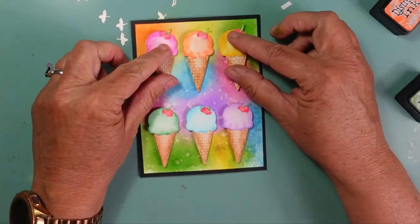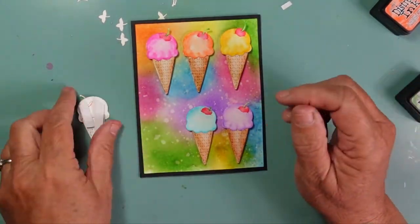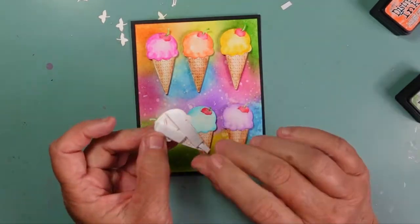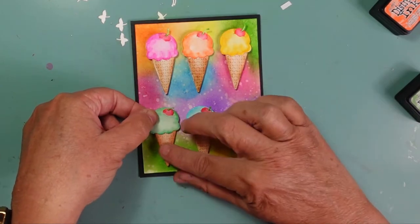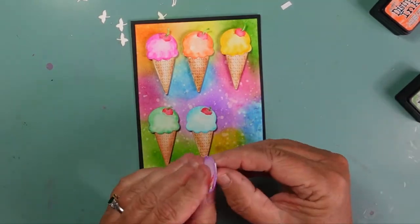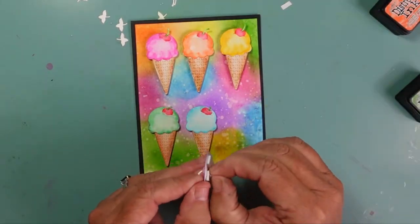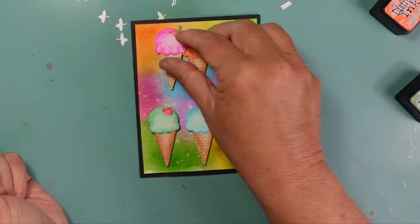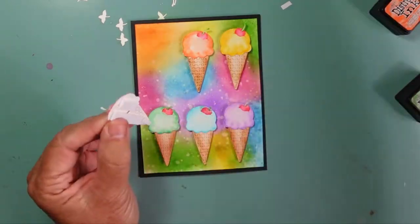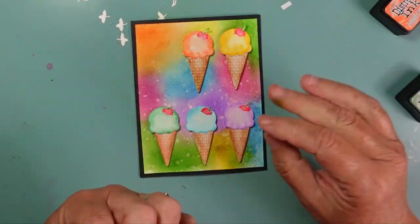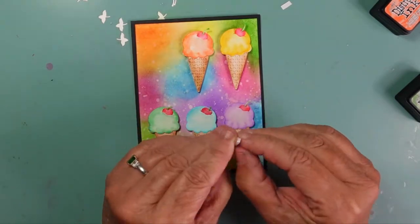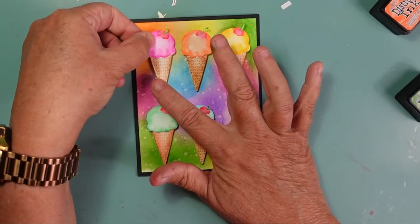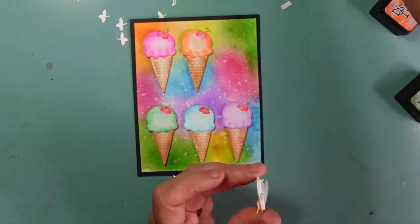For my sentiment, I did do that off camera. I had a sentiment from Honey Bee Stamps that I just went ahead, it says hello. I stamped it out onto a scrap piece of white cardstock. I inked it with some VersaFine ink and then went over the top of it with that Picked Raspberry. It's a very small sentiment. I didn't want to take away from my ice cream cone, so I wanted to do something that was just a little bit smaller on the card.